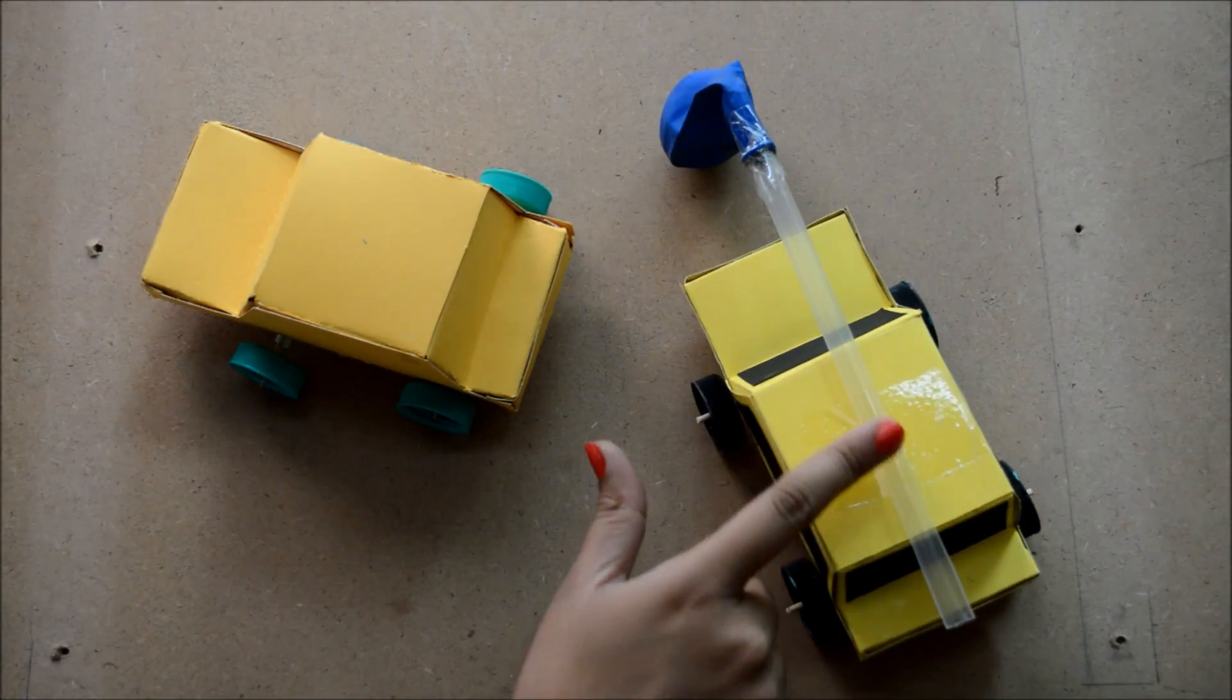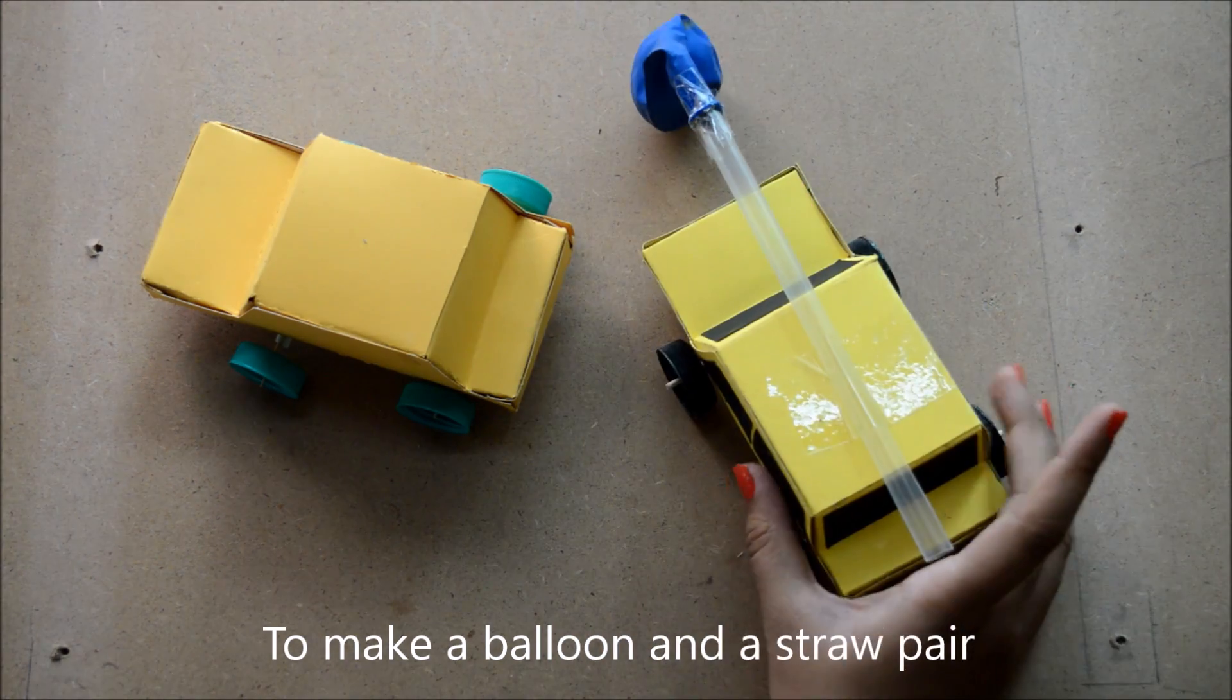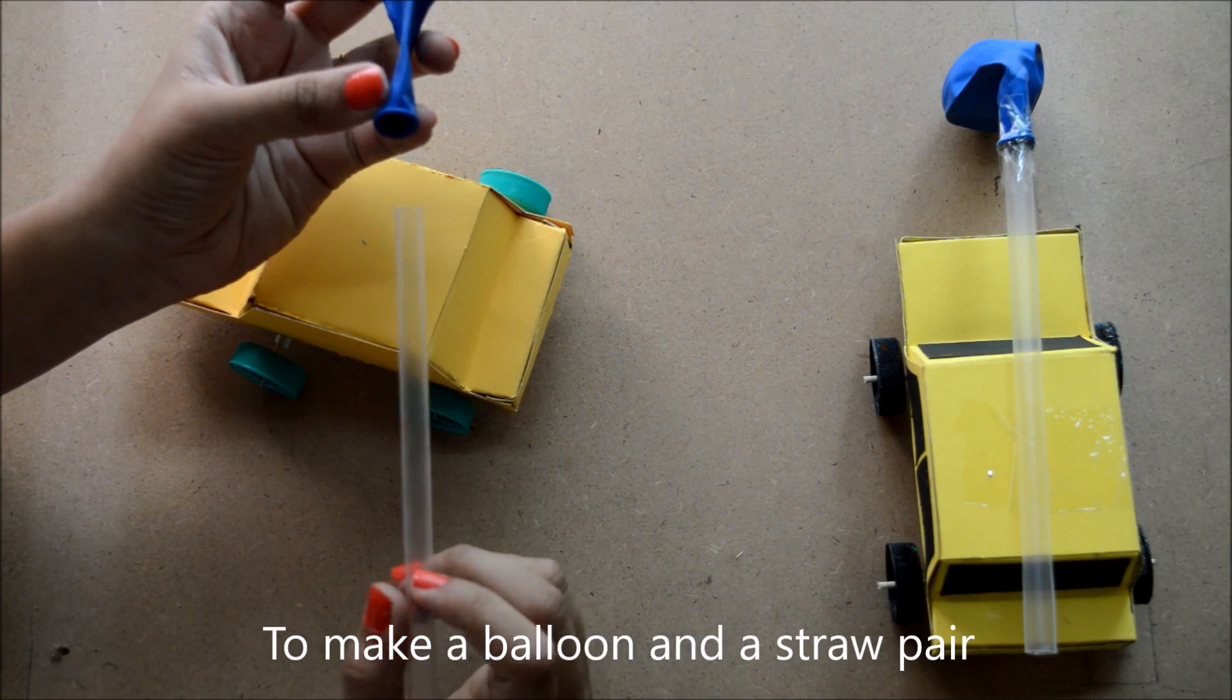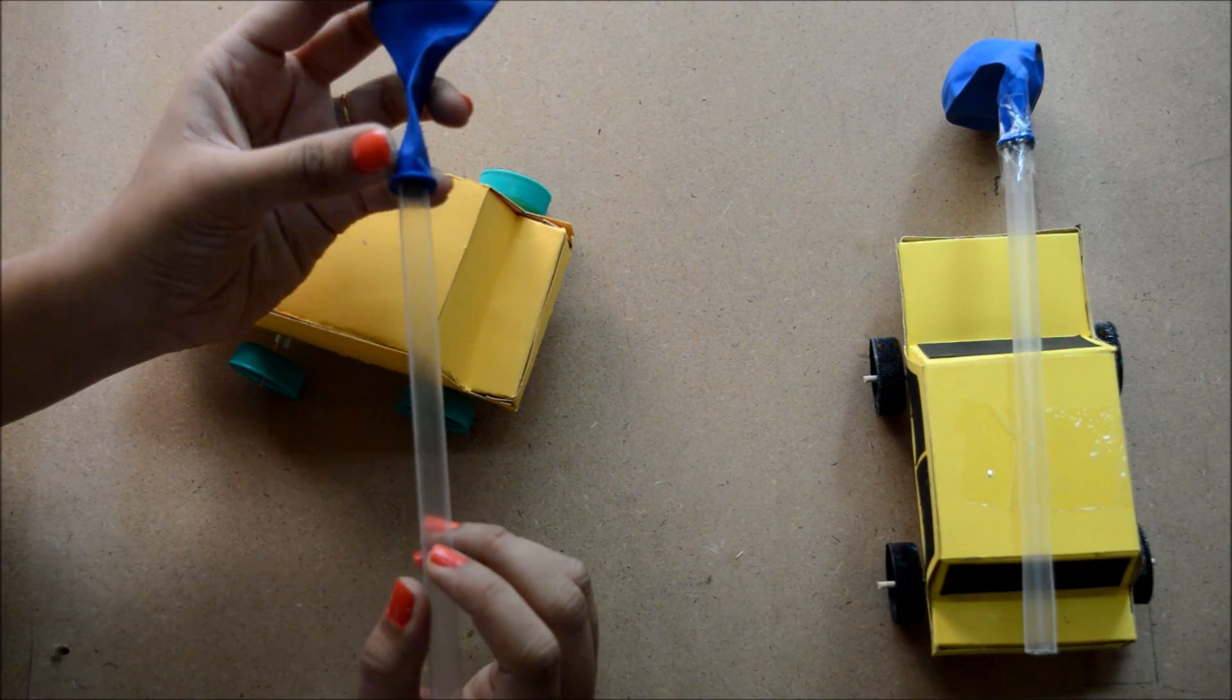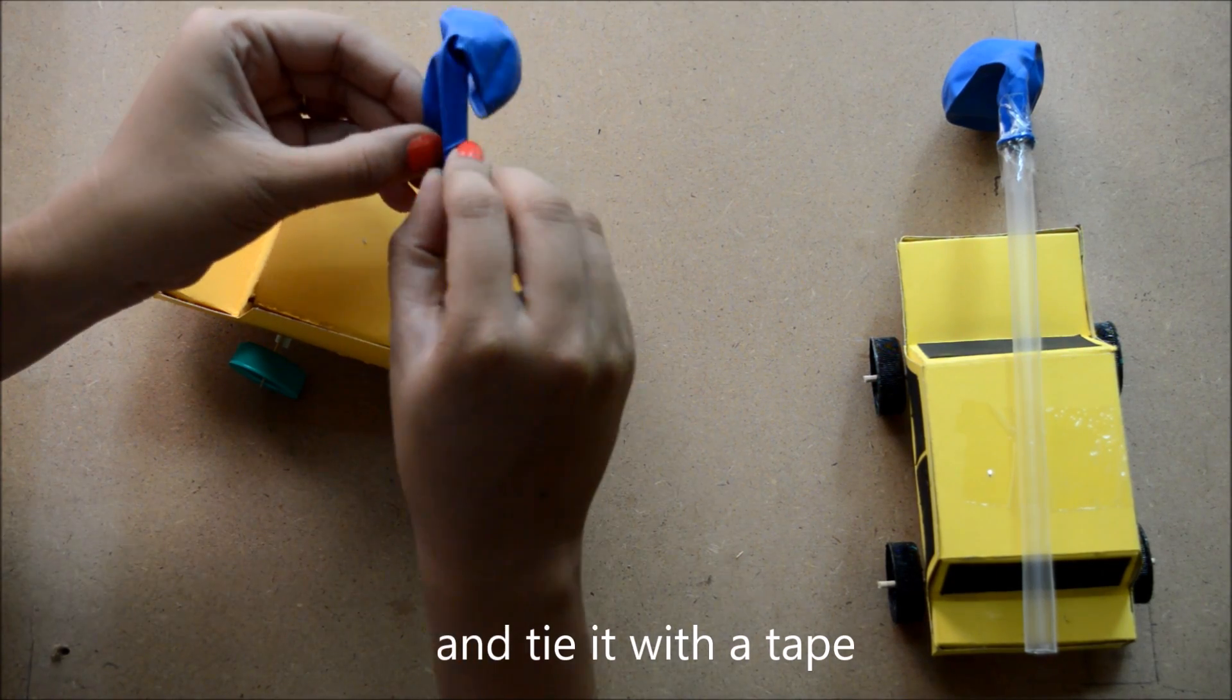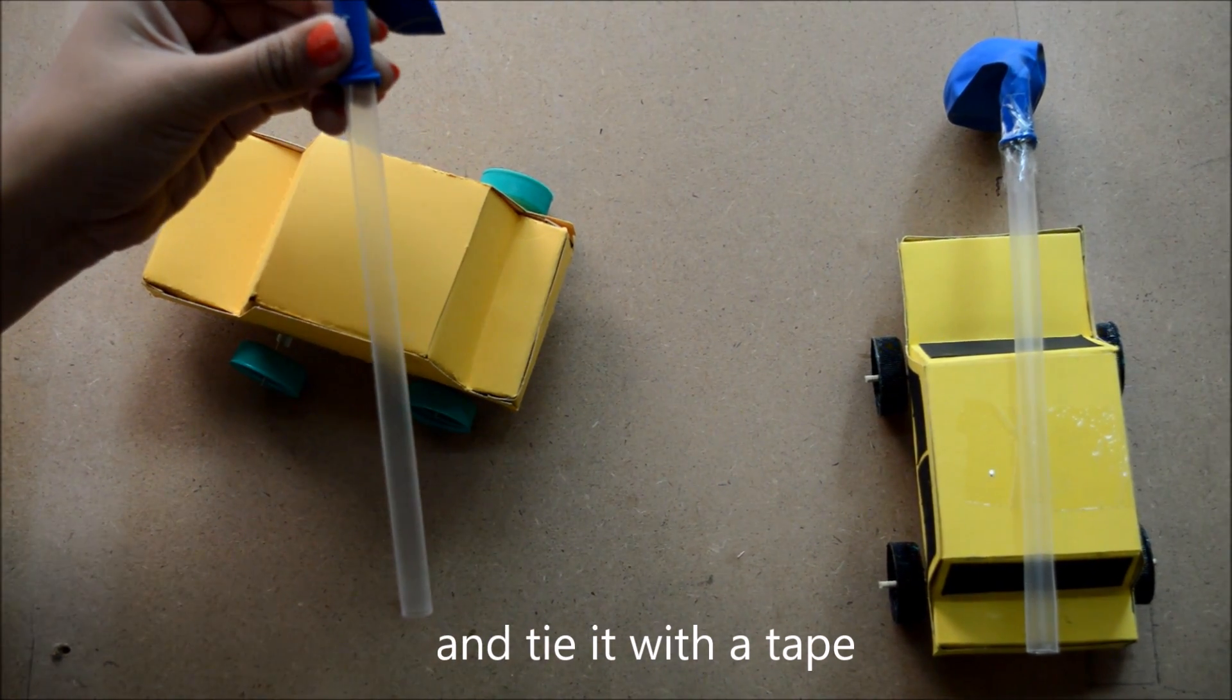To make a balloon and straw pair, we require a straw and a balloon. Now insert the straw in the balloon and tie it using tape.